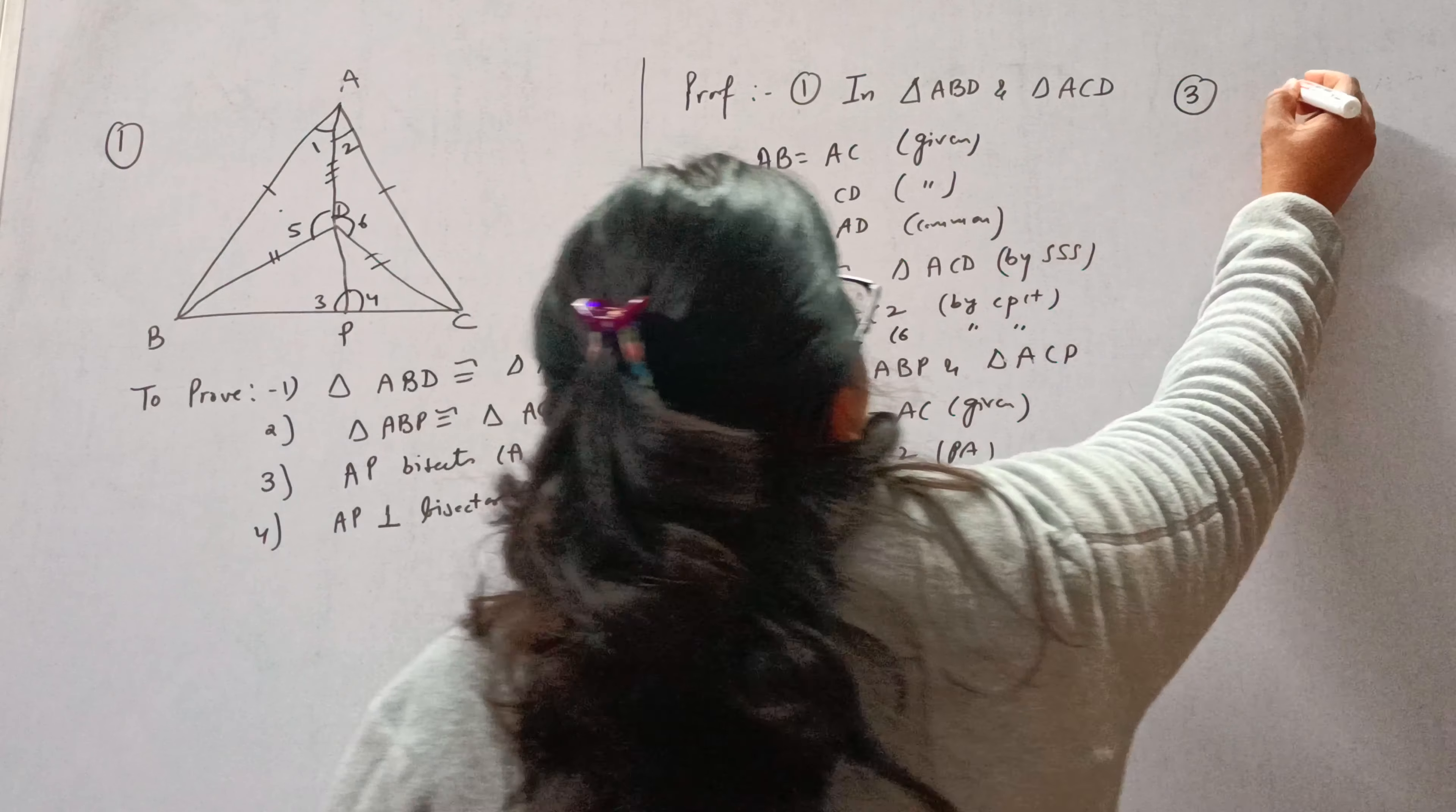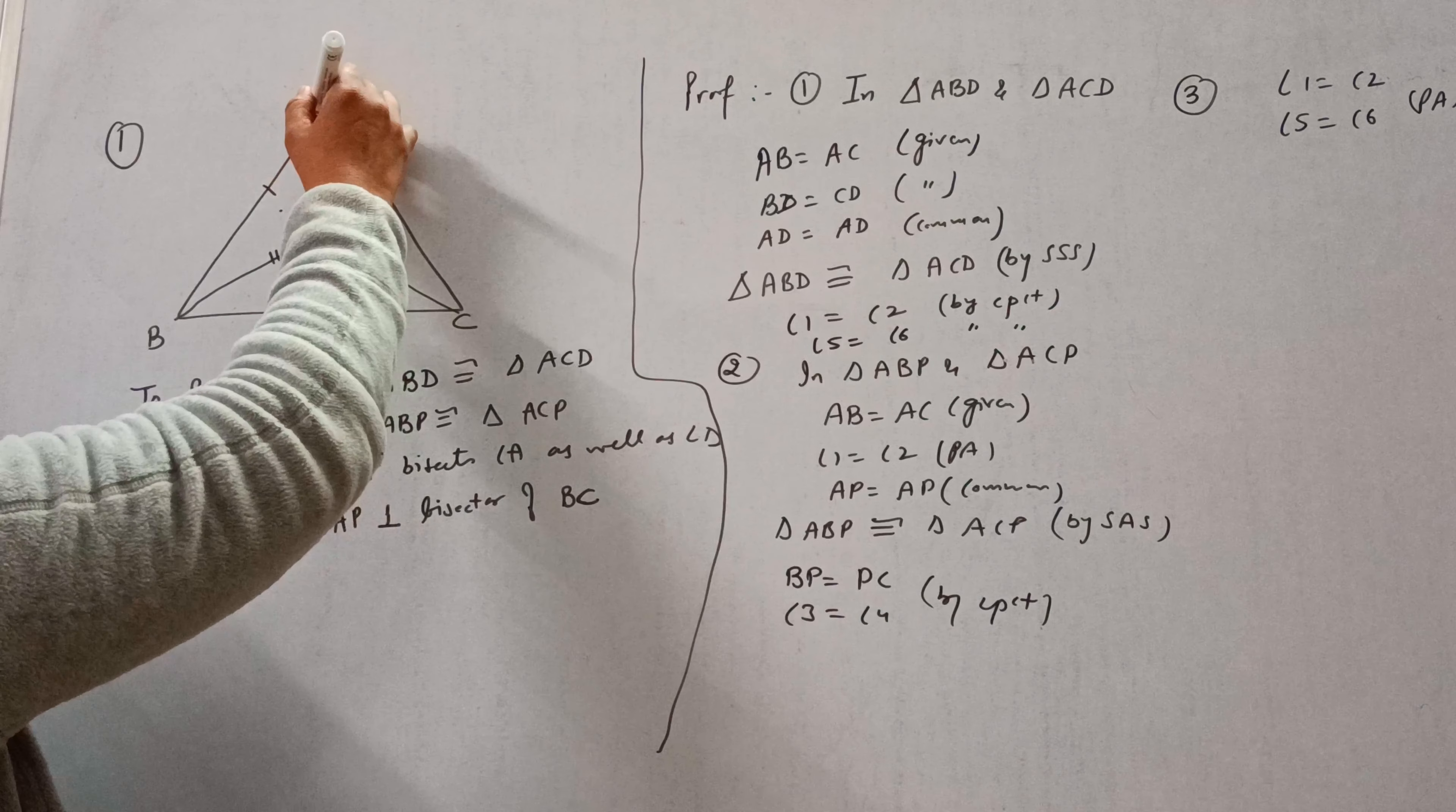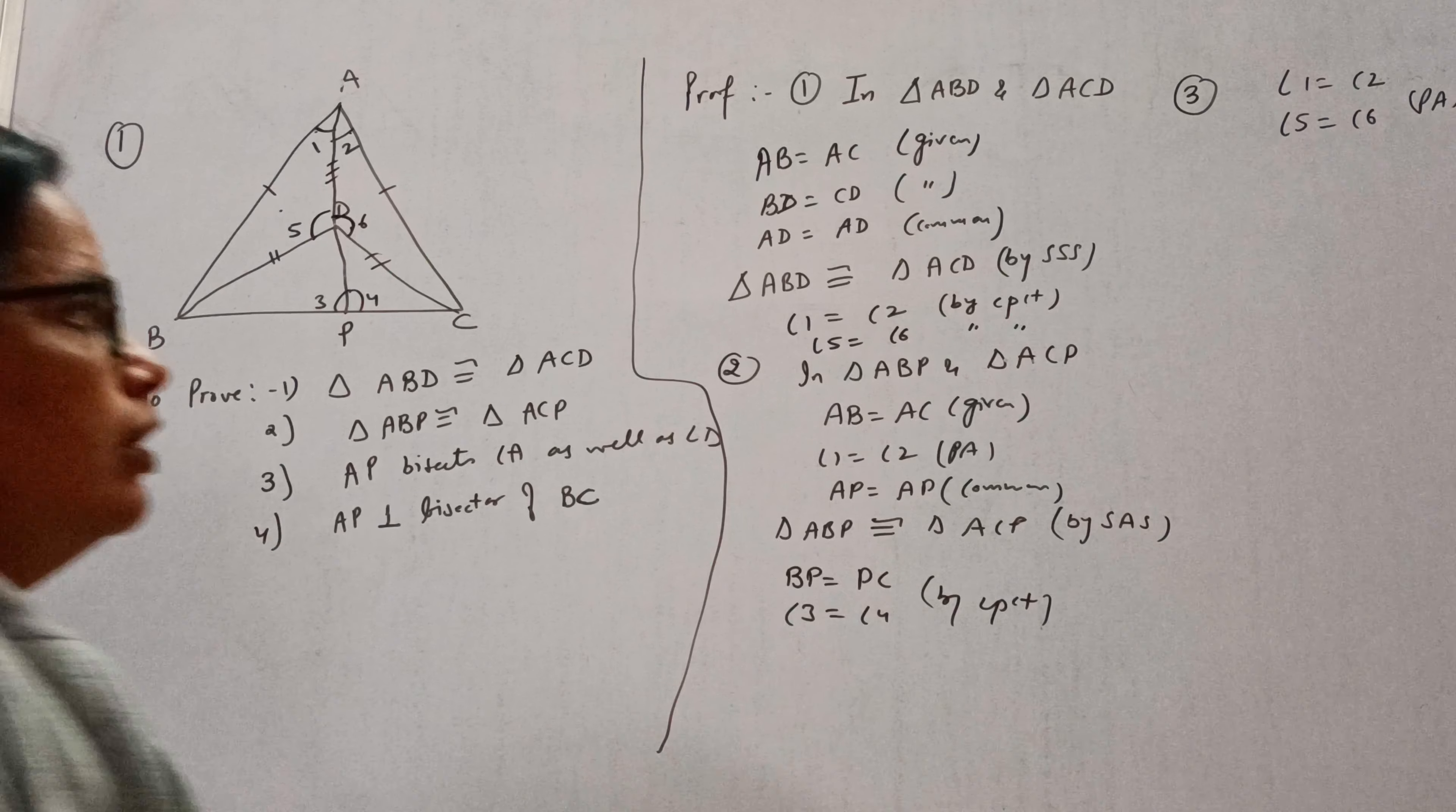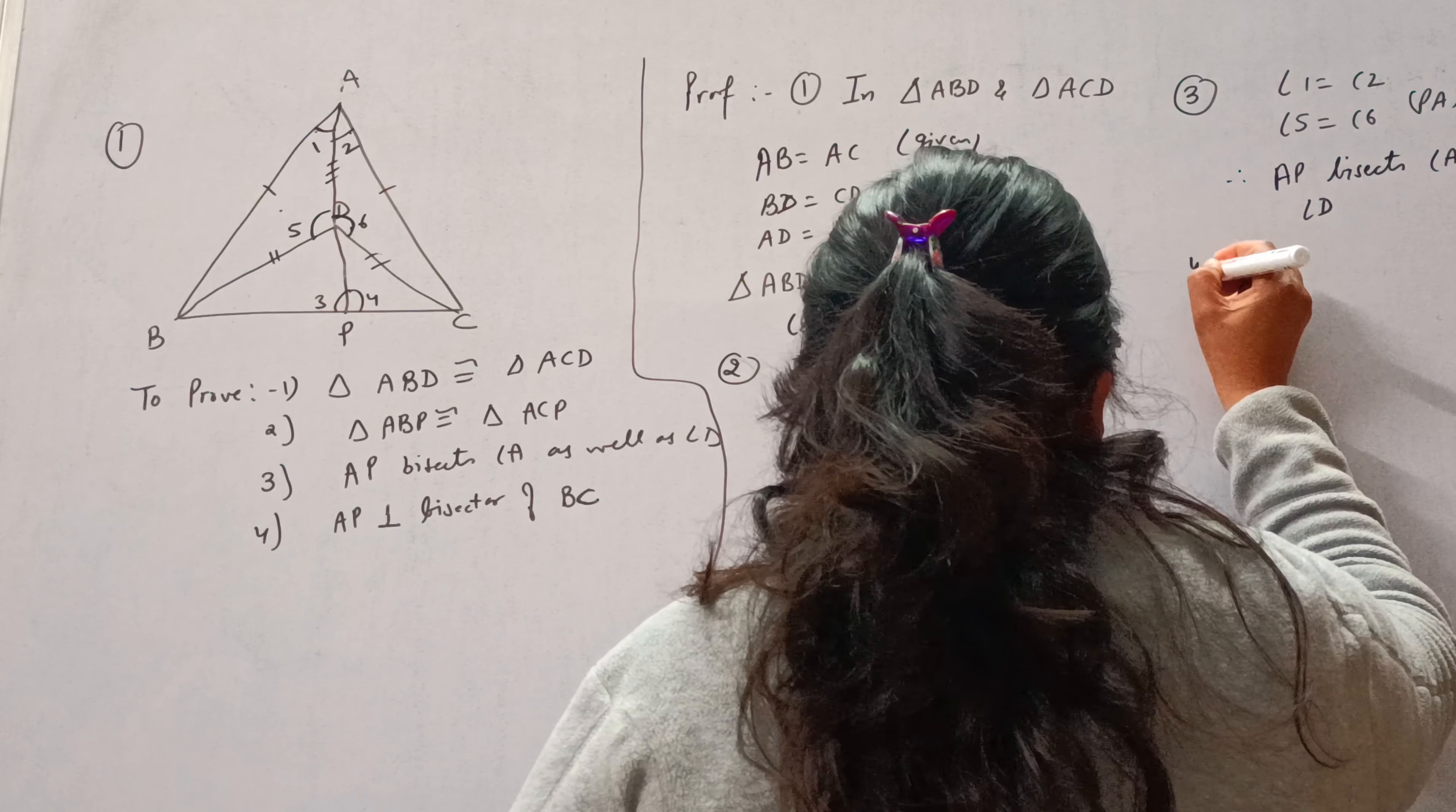We have proved angle 1 is equal to angle 2 and angle 5 is equal to angle 6, proved above. If angle 1 is equal to angle 2, it means AP bisects angle A. And if angle 5 is equal to angle 6, it means AP bisects angle D also. Therefore we can write AP bisects angle A as well as angle D.